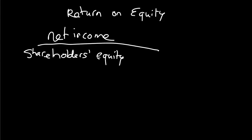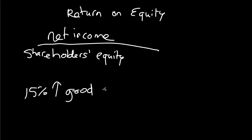This ratio represents how good a company is at using its equity — including its factories and all of the investments it makes into its own business — to generate additional income. In the book Buffetology, a return on equity of 15% or higher is considered good. That's something to keep in mind when evaluating whether a company is profitable and using its equity effectively.